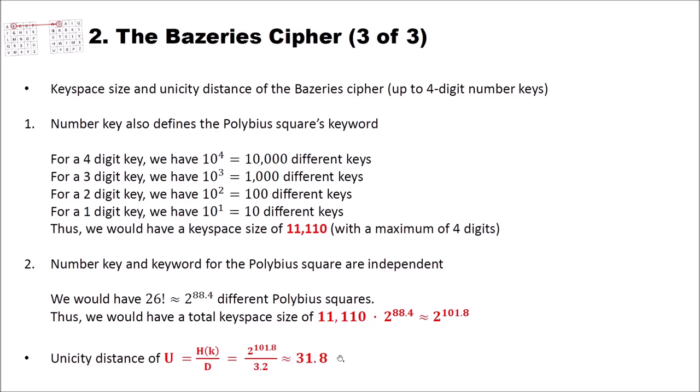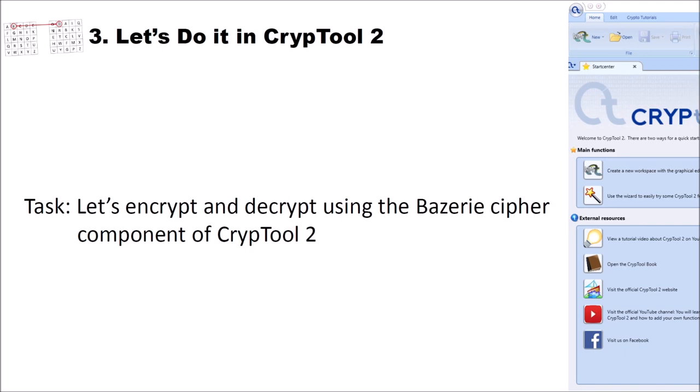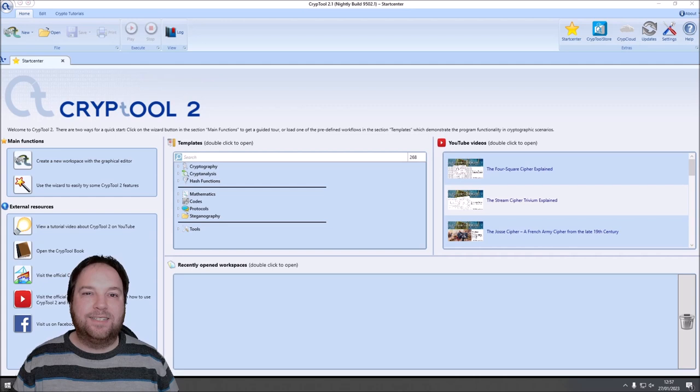Now that we know how the Bazeries cipher works, let's encrypt and decrypt using the Bazeries cipher component of CrypTool 2. I'm here now in the start center of CrypTool 2. I use the current nightly build, build number 9502.1. And I want to show you how you can encrypt or decrypt using the Bazeries cipher. To do so, I first create a new workspace.